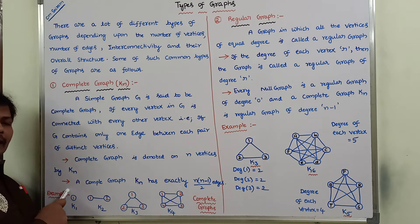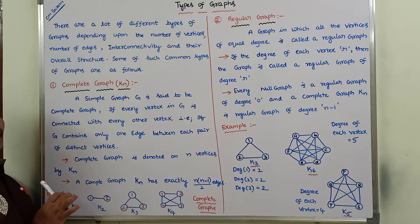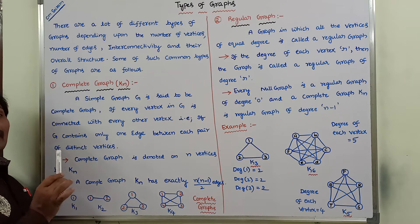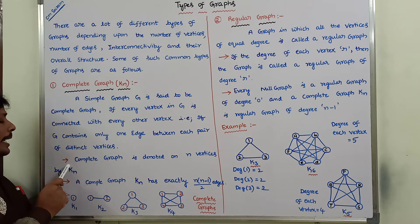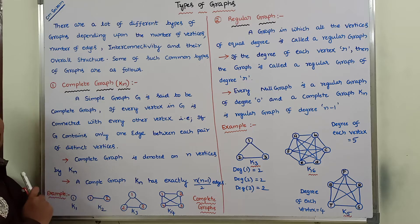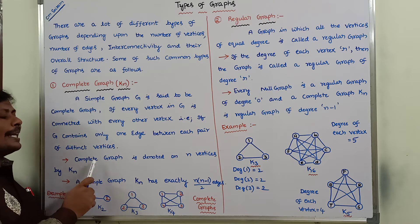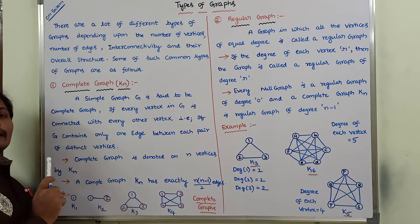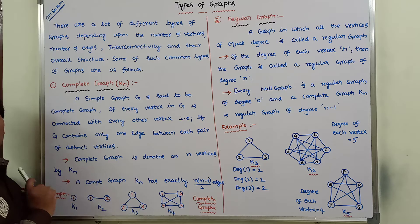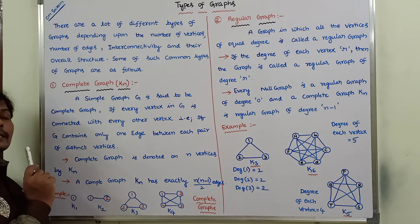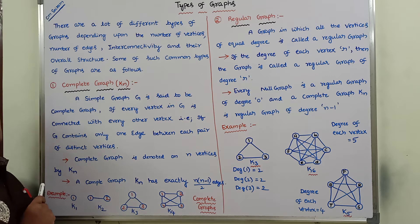Next, consider a graph with only two vertices: 1 is connected with the remaining vertex, that is 2, and 2 is connected with 1. Then consider a graph with only a single vertex. A complete graph with n vertices is denoted by K suffix n.